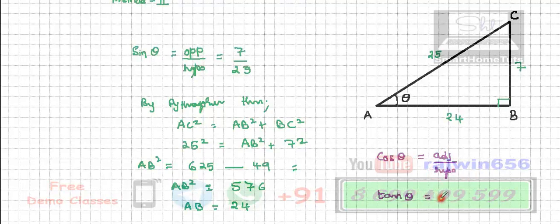And tan theta is opposite upon adjacent. So cos theta is adjacent side, this is AB, that is 24 divided by hypotenuse, that is 25.